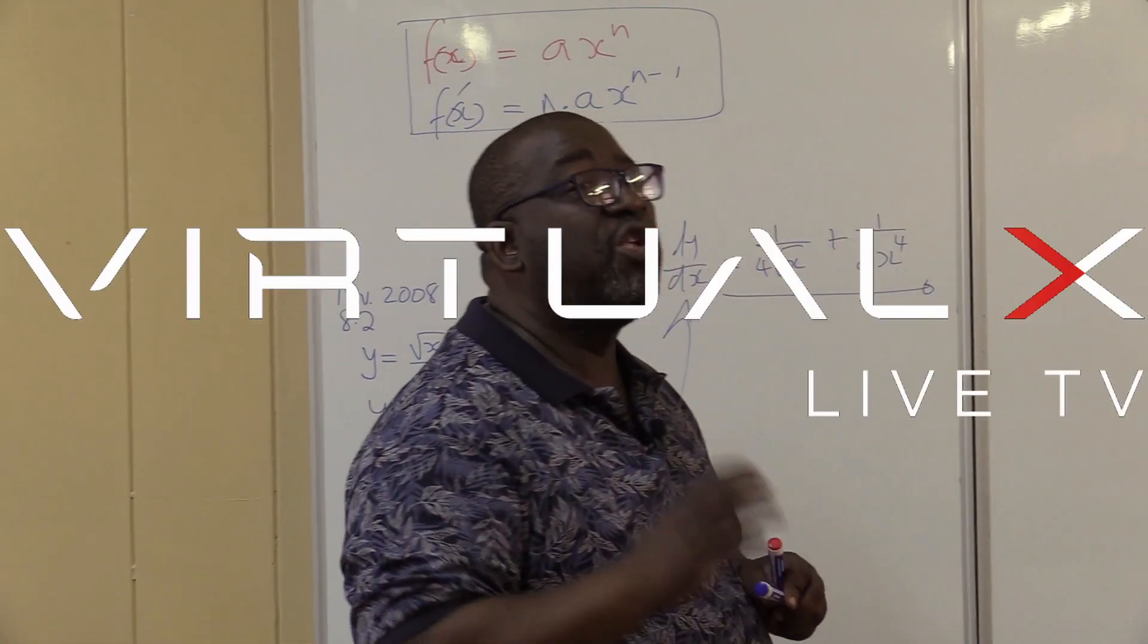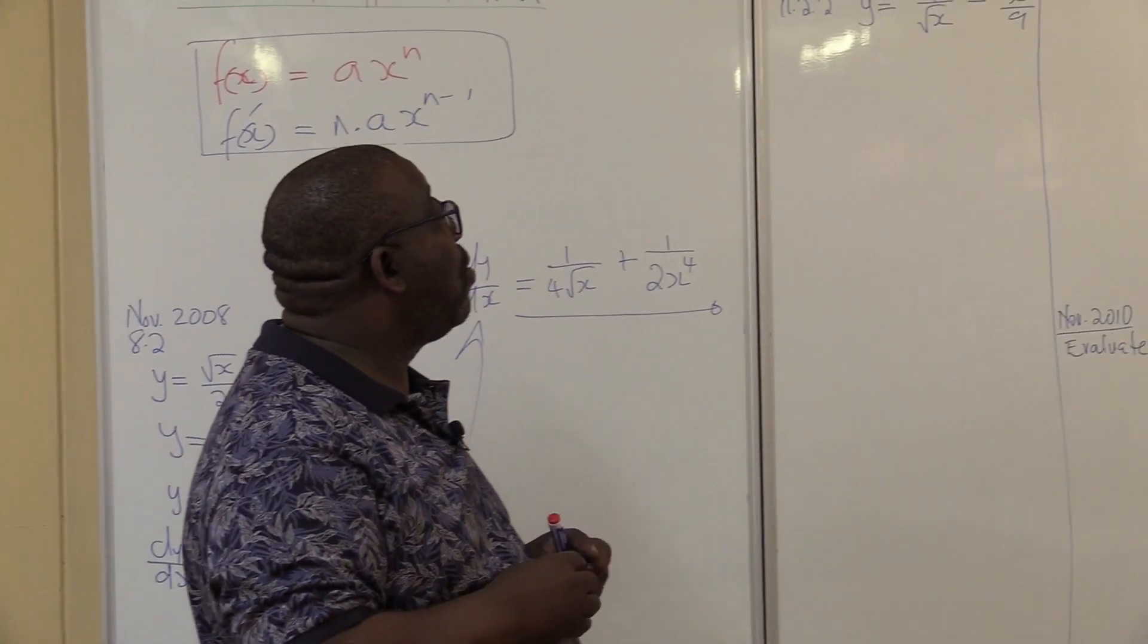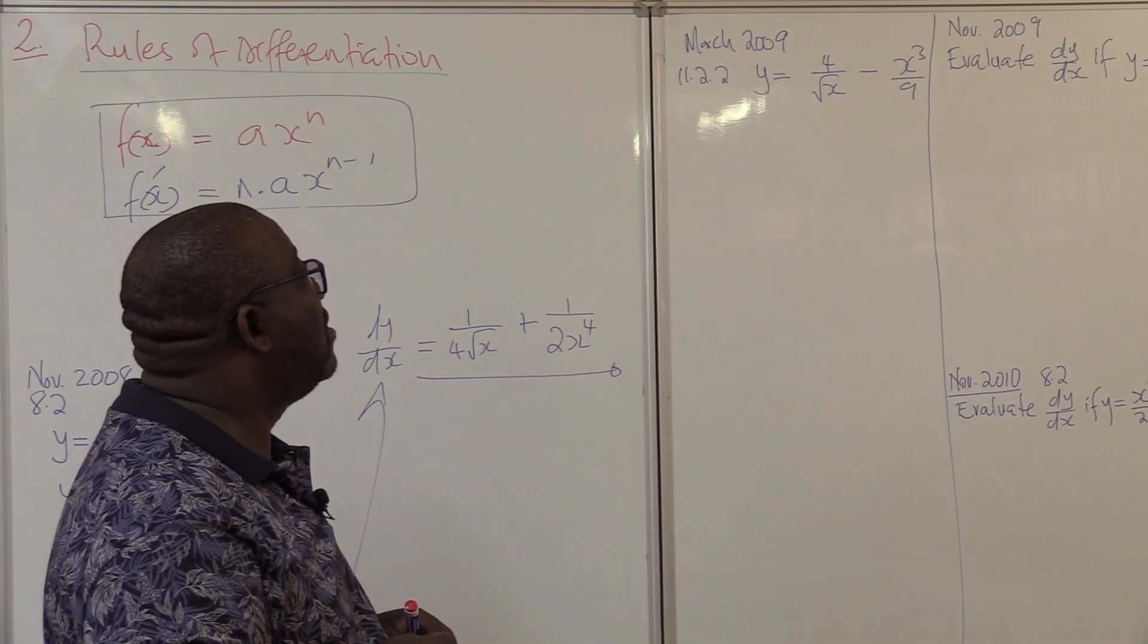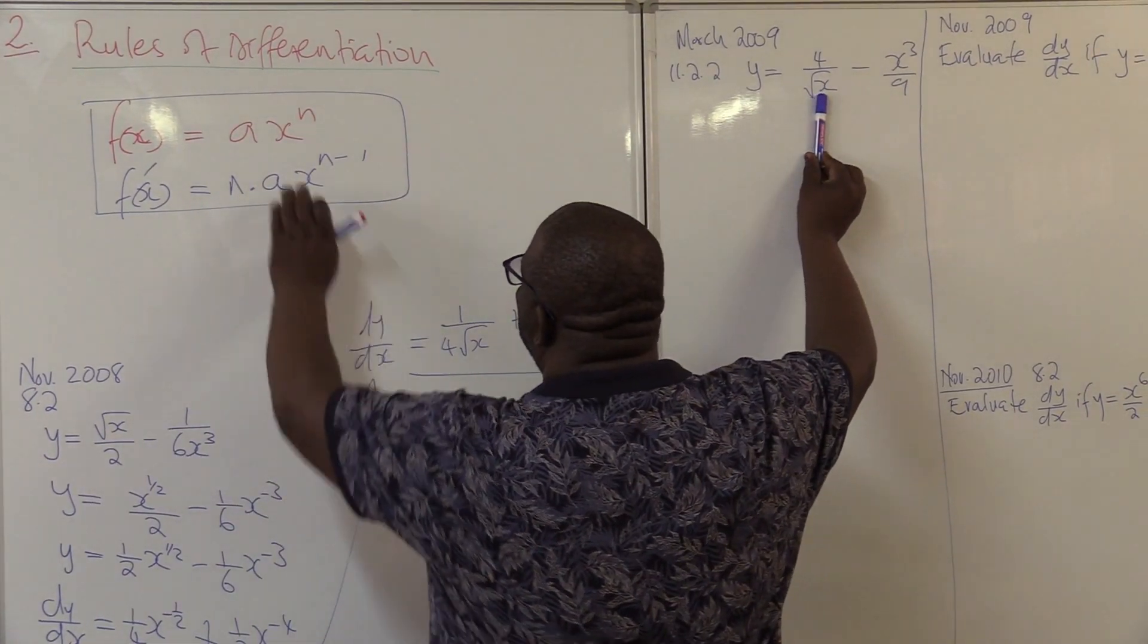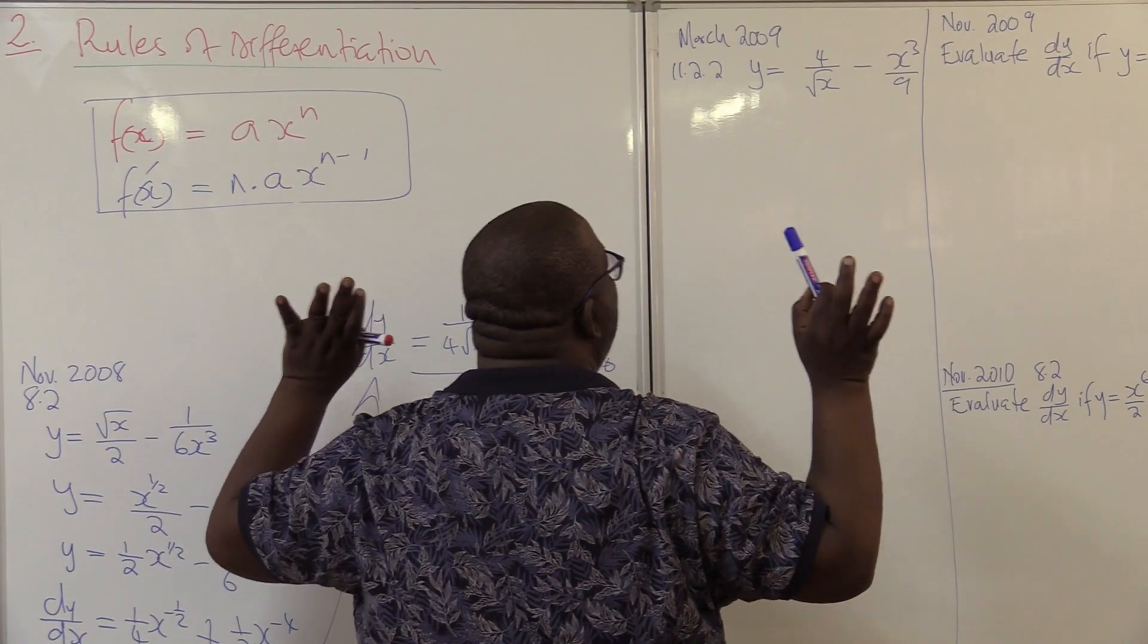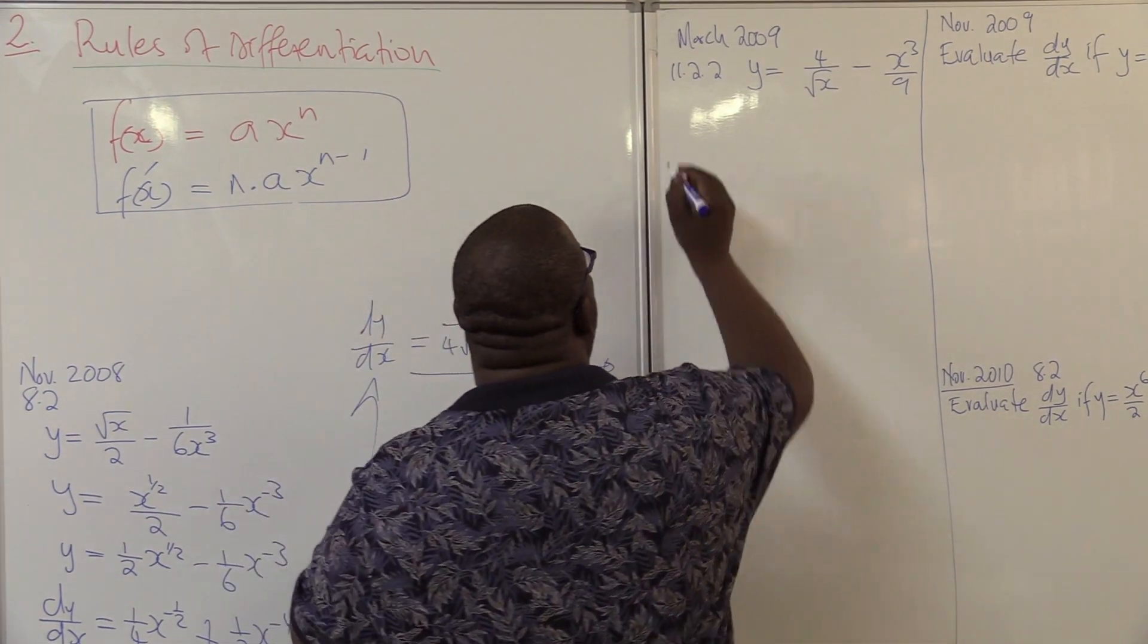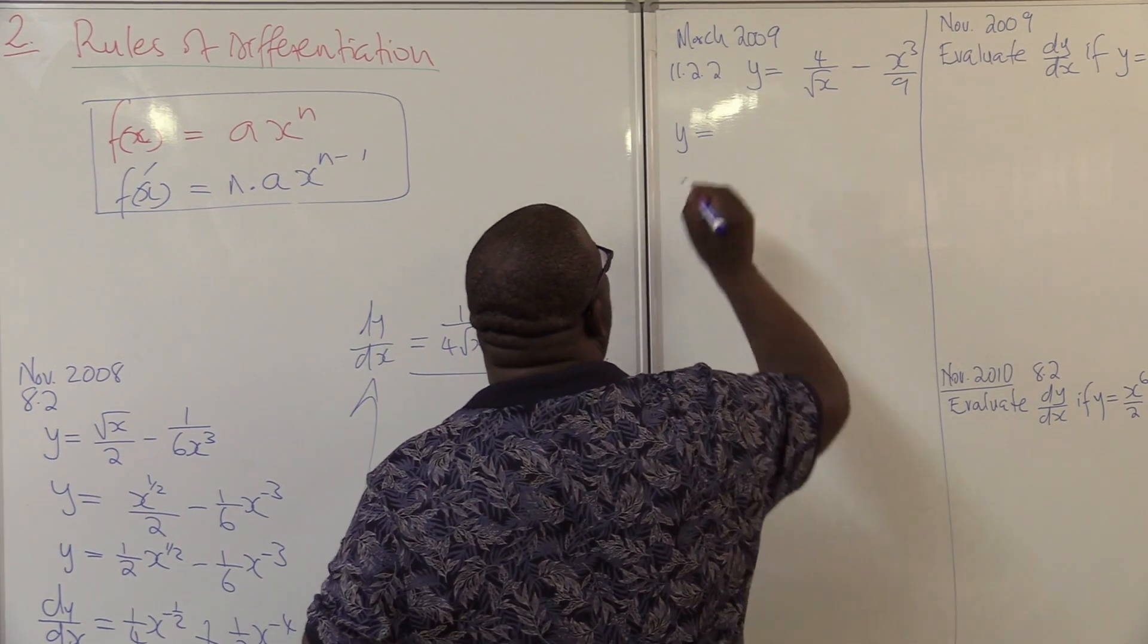I want us to look at this next problem. You know how to deal with radical signs, the square roots and cube roots and stuff like that. This is not arranged in the standard form. This is also not arranged in the standard form. Let us arrange it first. I'm not differentiating yet, I'm just arranging it.